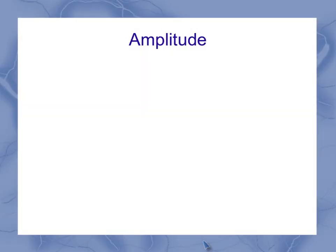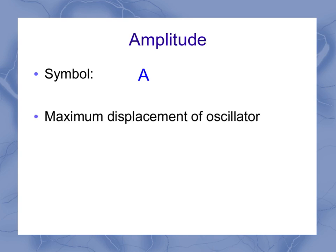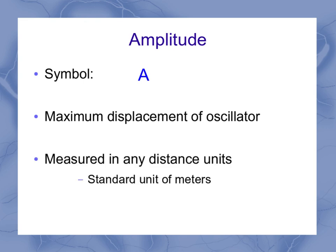Start with the easy one, the amplitude. It's got the symbol of a capital A. Don't use a lowercase a, make sure it's a capital A. It represents the maximum displacement of the oscillator, and it can be measured in any distance units. A standard unit would be meters, but I could use other distance measurements like centimeters or feet as well.